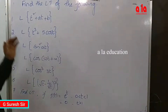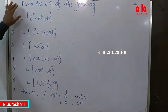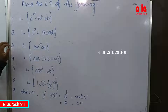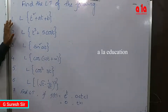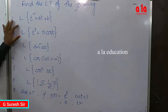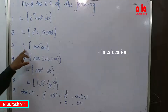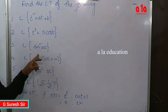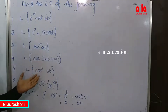Homework problems: find the Laplace transform of the following functions. First, Laplace transform of t squared plus 8t plus 3. Second, Laplace transform of t cubed plus pi plus t. Third, Laplace transform of sine squared 8t. Fourth, Laplace transform of cosine of something.